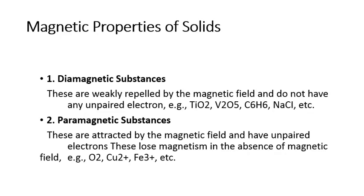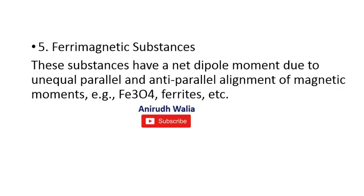The fifth type is ferrimagnetic substances. These have a net dipole moment due to unequal parallel and anti-parallel alignment of magnetic moments. They may have unequal parallel but also anti-parallel alignment of magnetic moments. Examples: Fe₃O₄, ferrites, etc.